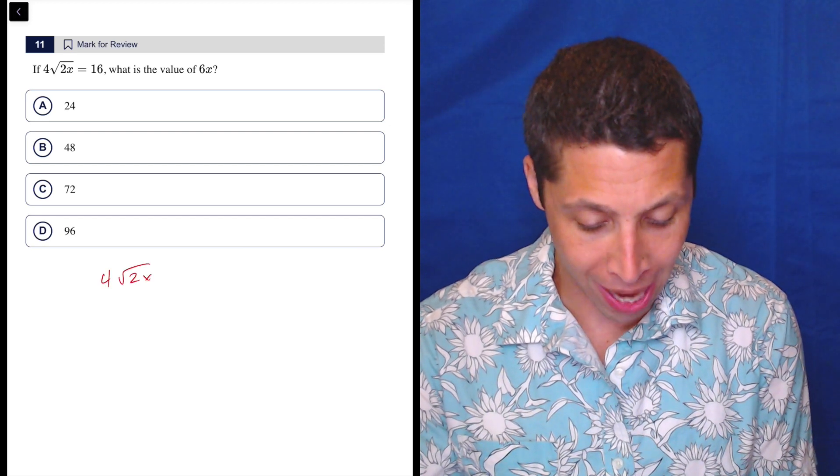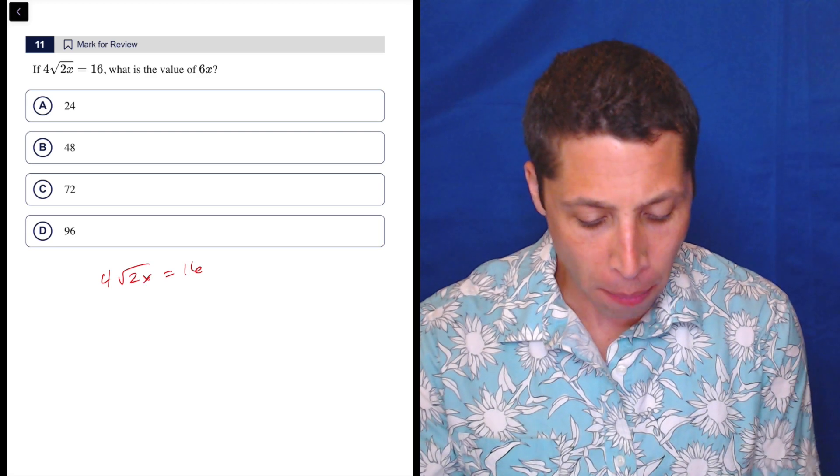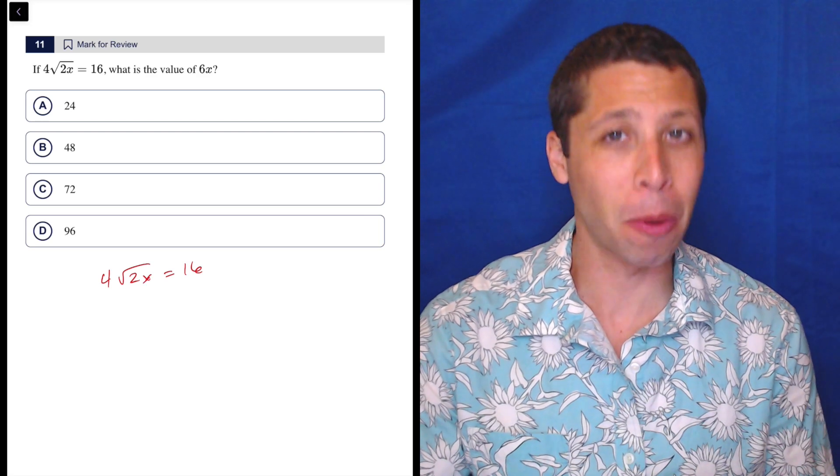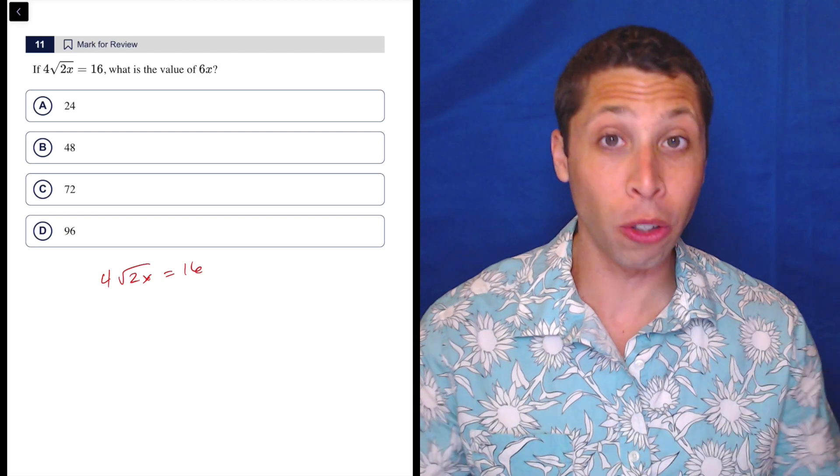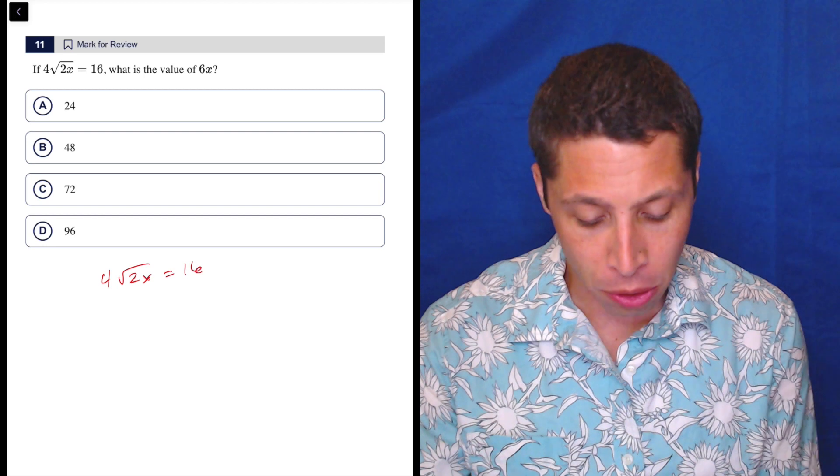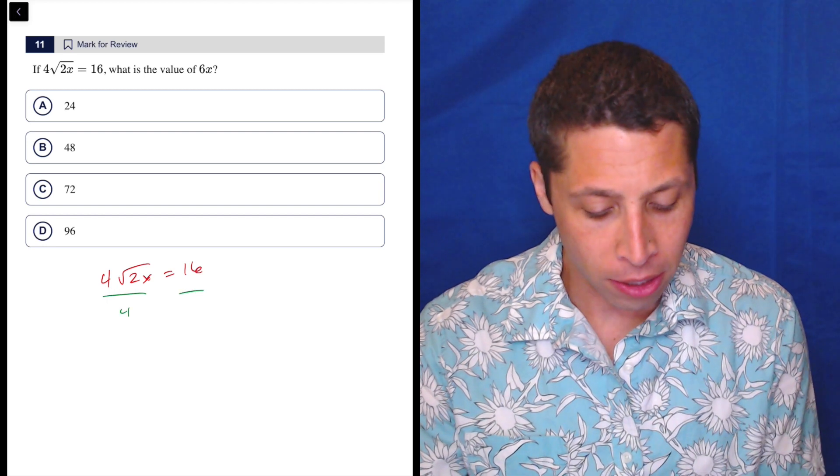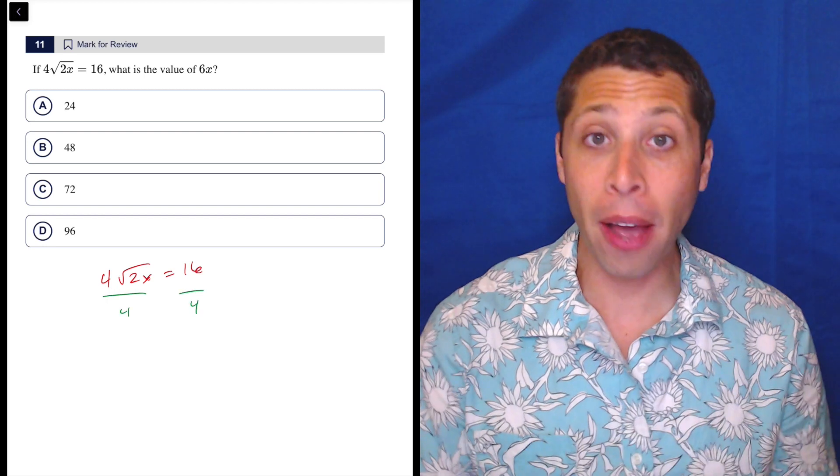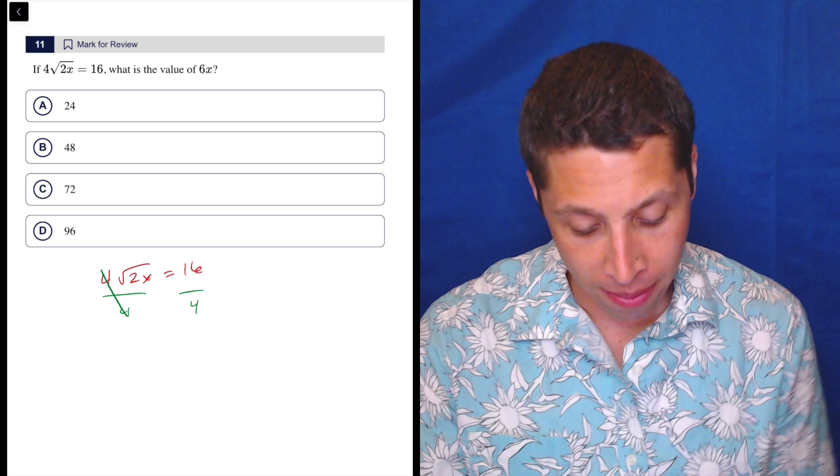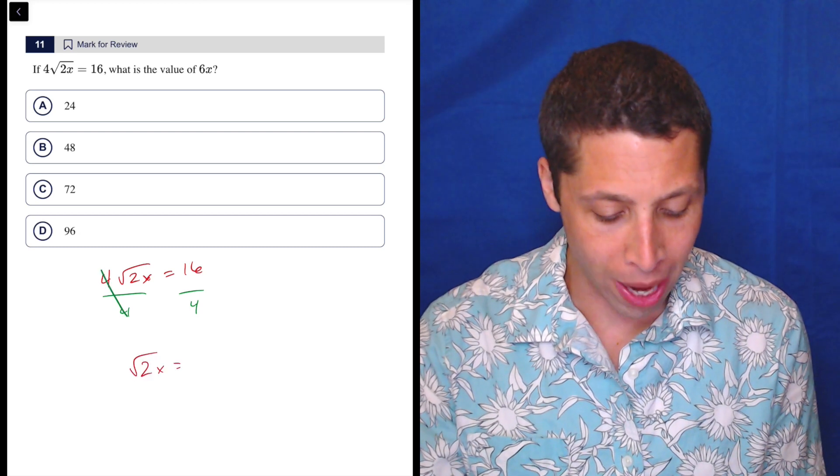So if we have 4 square root 2x equals 16, remember our goal is to get the x alone, to isolate x. We don't have any exponents here really, so our goal is to work our way towards that. So you just have to think about opposites. The first thing we need to do is get this 4 out of here, so it's being multiplied by the radical, so we're going to divide by the 4 to get rid of it, so that'll cross this out, and then we're left with the square root of 2x equals 4.